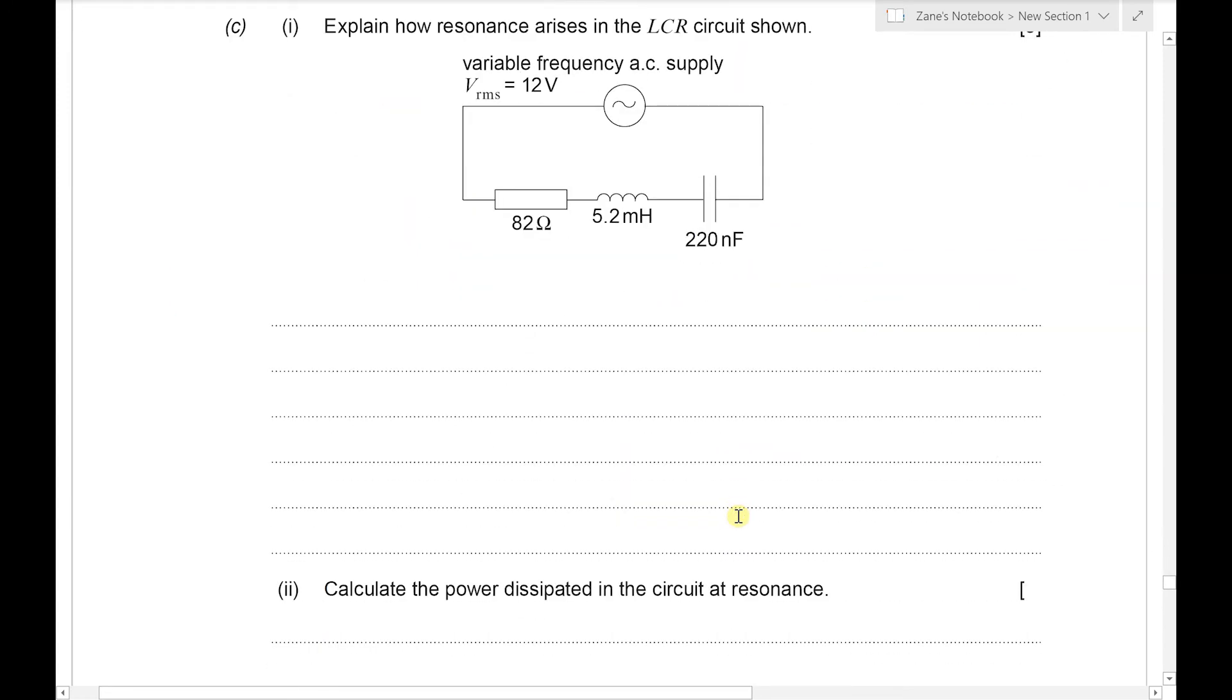For part C1 we've got to explain how resonance arises in the LCR circuit below, so it's basically the same circuit as before with the addition of a capacitor. And the point is at resonance, X_L and X_C, the reactances of the inductor and the capacitor, will be equal and opposite. In other words if we drew a phasor diagram, the phasor representing X_L would be in the opposite direction to X_C, given a resultant of 0.